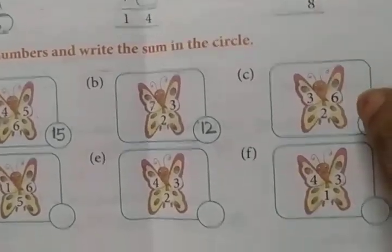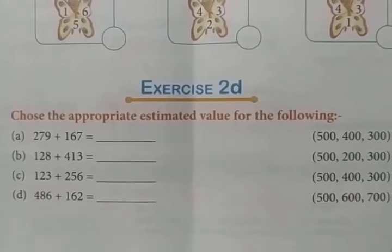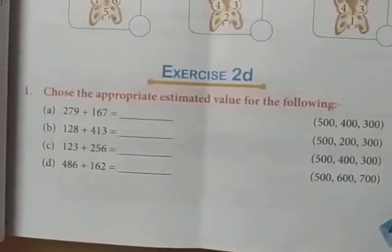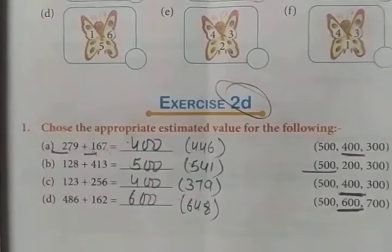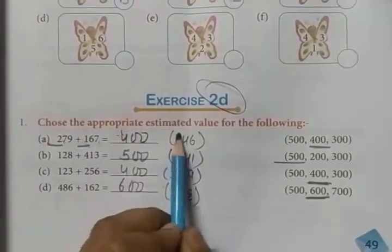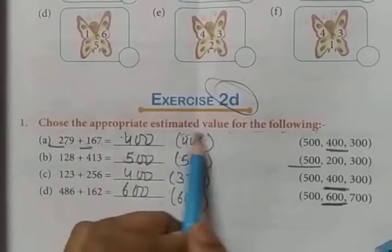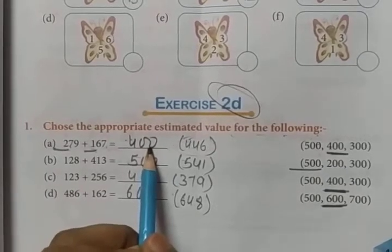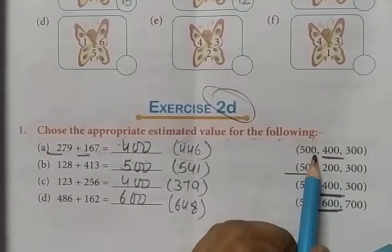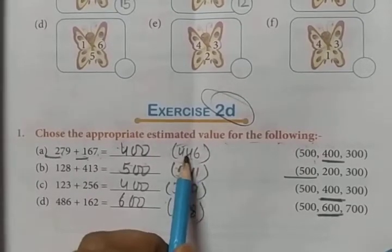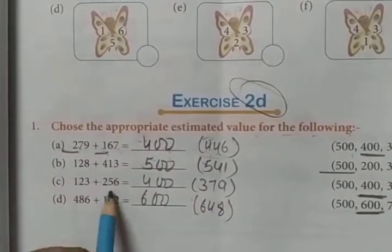Here you will write the estimated value of the given questions. Choose the appropriate estimate value for the following. As you can see, the teacher has done these questions for you. Our actual sum is given and our estimated sum is this. If the number is more than 50, it will be rounded up, and if it is lower than 50, it will be rounded down. So 446 — since 46 is lower than 50, it will be 400. In the same way, you will do all the other questions.